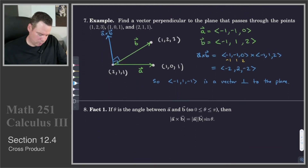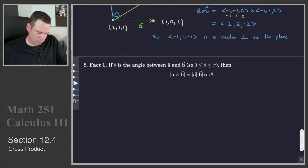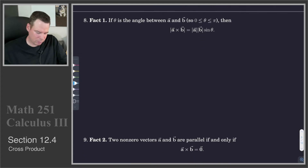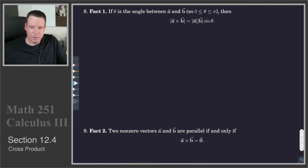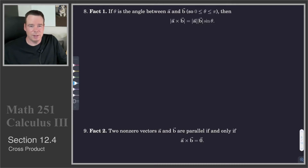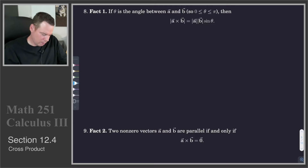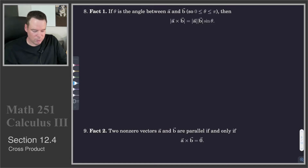We're going to look at a connection between the cross product and the angle between two vectors. The dot product gave a connection between two vectors and the cosine of the angle between them. It turns out the cross product gives a connection between two vectors and sine of the angle: the magnitude of A cross B equals the magnitude of A times the magnitude of B times sine theta.